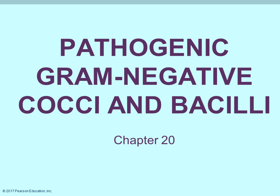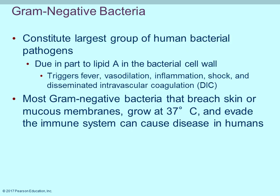This is chapter 20 dealing with gram-negative cocci and bacilli bacteria that are human pathogenic. Gram-negative bacteria will look reddish-pink when doing the gram stain and they comprise the largest group of pathogenic microorganisms to humans. One key thing to remember about gram-negatives is that they contain lipid A in their cell wall, and when released upon cell death it triggers fever, vasodilation, and the inflammatory response leading to shock.